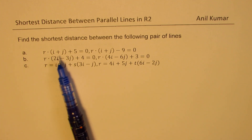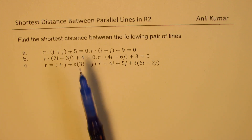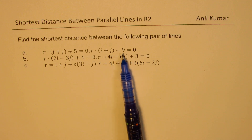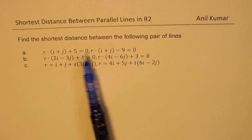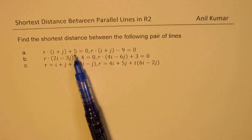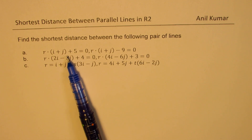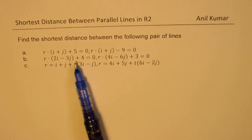The first example: r dot (i plus j) plus 5 equals 0, and r dot (i plus j) minus 9 equals 0. These are a set of parallel lines and we need to find the distance between them.